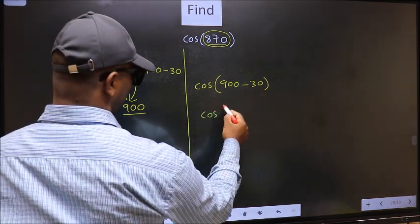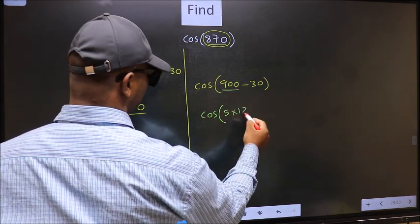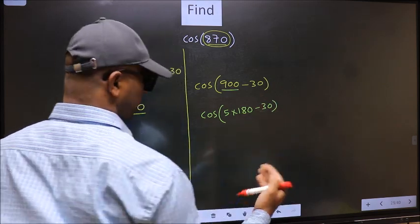This is your step 1. Next, cos. In place of 900, now we write 5 into 180 minus 30.